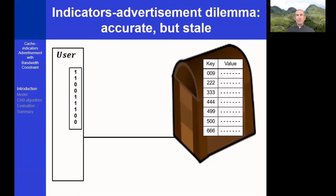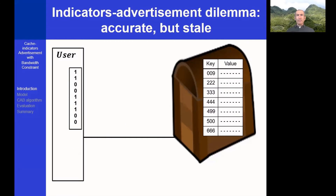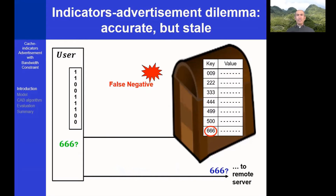For instance, the user is now looking for item 888, that was evicted from the cache after the cache has transmitted the list advertisement. The item is not stored in the cache anymore, thus causing a false positive event, resulting in an unnecessary cache access. Furthermore, consider the case where the user is looking for item 666, that was inserted into the cache after the cache has transmitted the list advertisement. The user doesn't know that 666 is already stored in the cache, and therefore accesses a remote server. This is a false negative event.